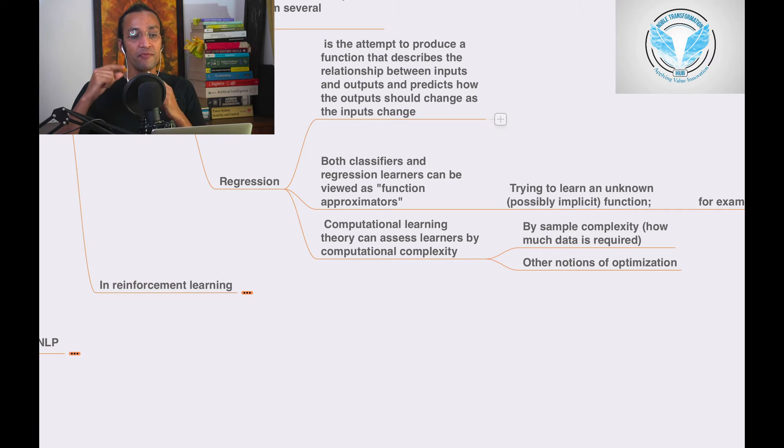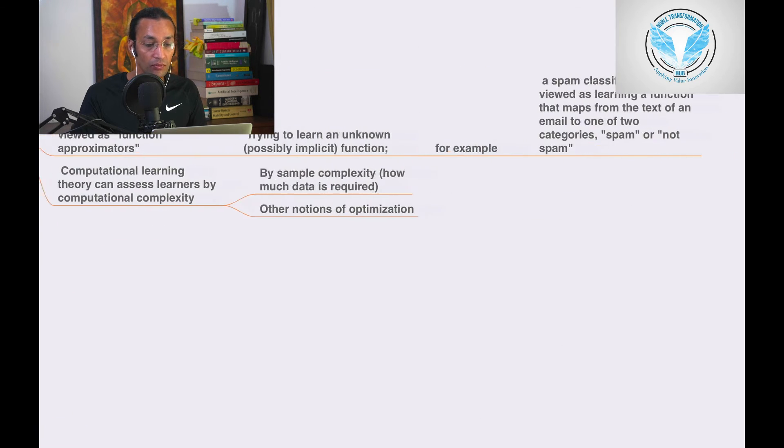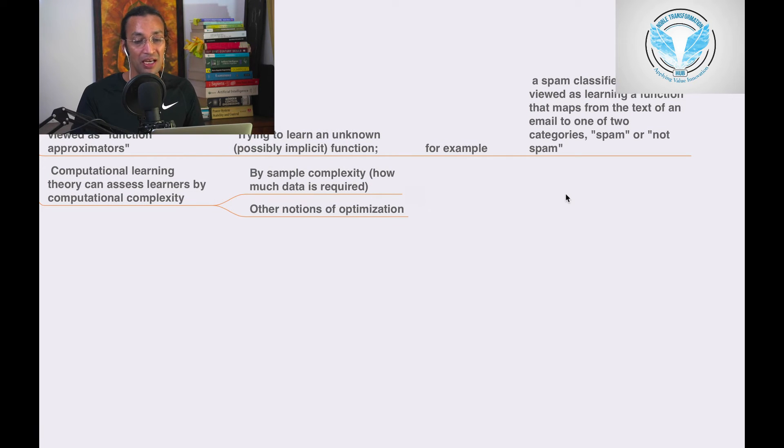Both classification and regression learning can be viewed as function approximators, trying to learn an unknown, possibly implicit function. Suppose you get a lot of unclean data - you use machine learning algorithms to classify and categorize using these techniques.